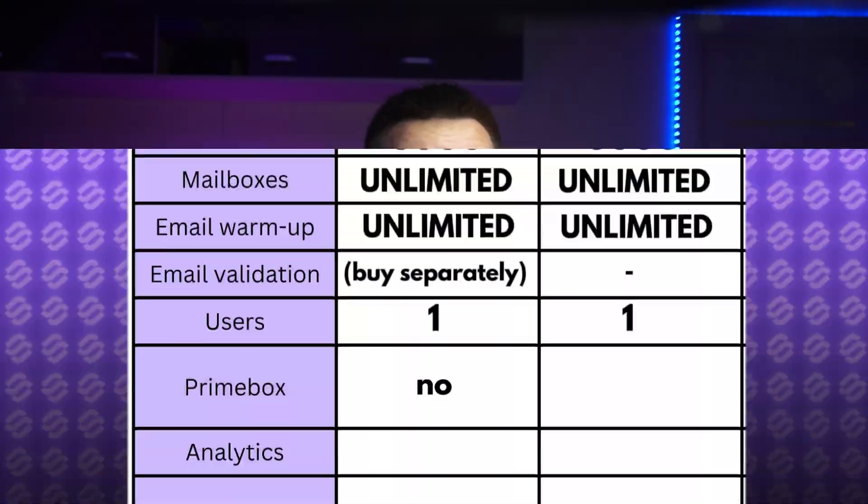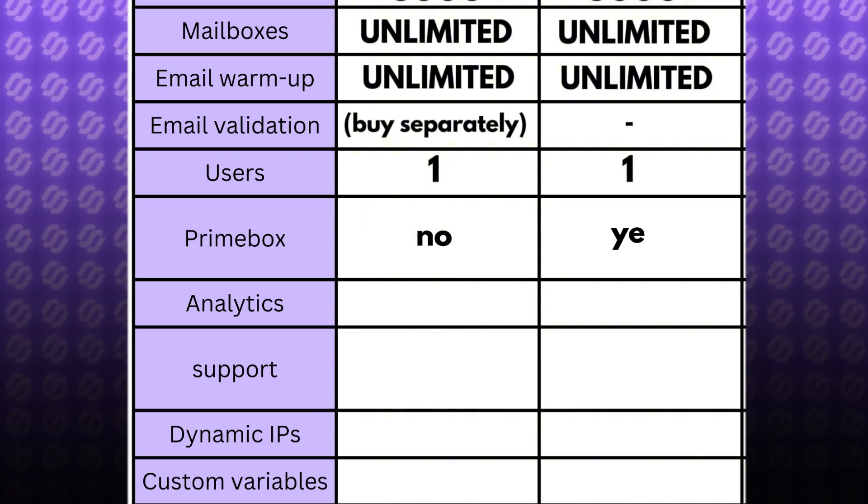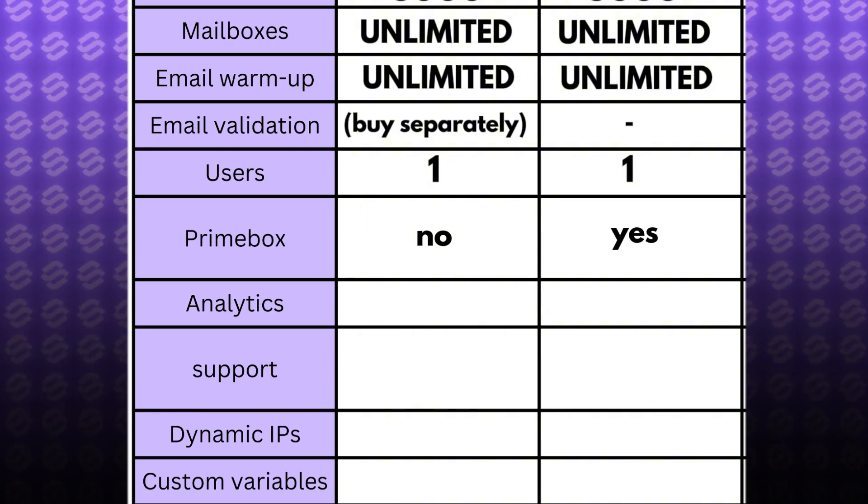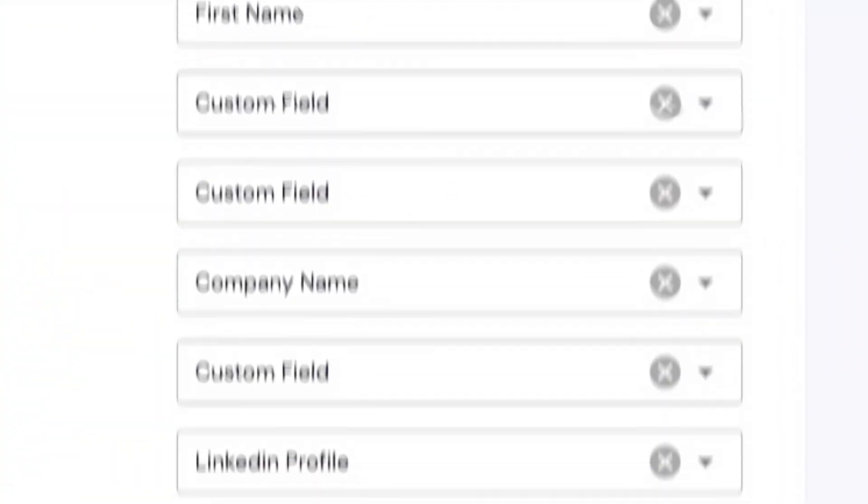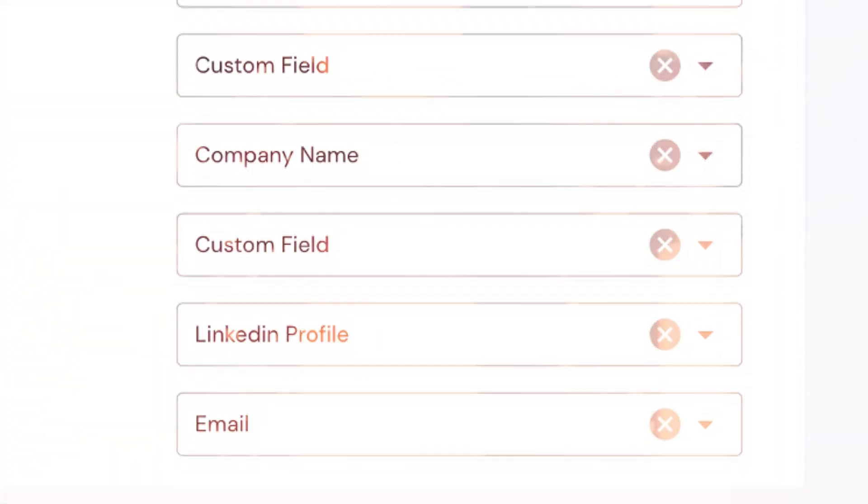This won't happen with Smartlead because Smartlead has a master inbox where you can see all your positive or negative replies. You can set up filters for easier viewing, and you can reply, forward, or do anything else you'd imagine, like pushing leads to another campaign or a DNC list.